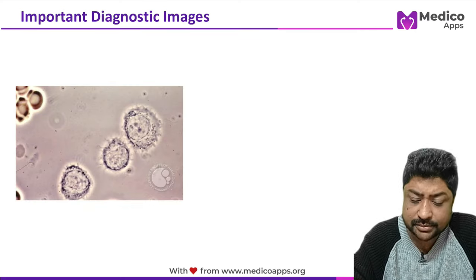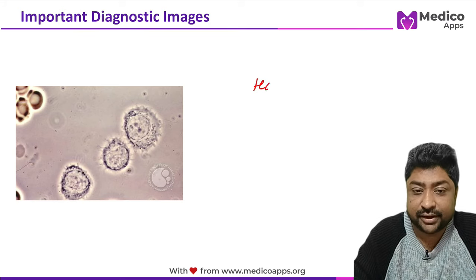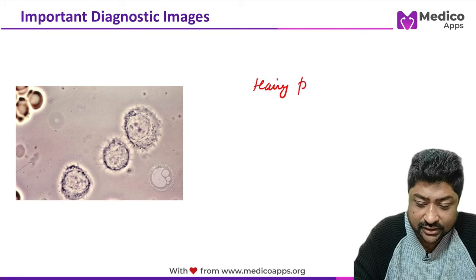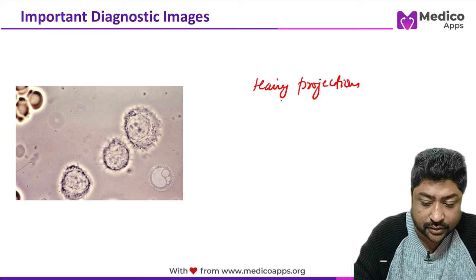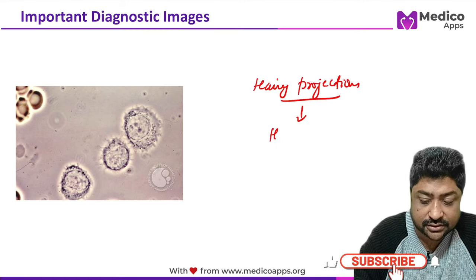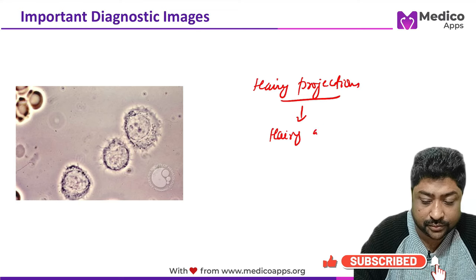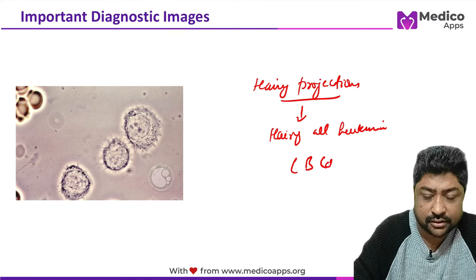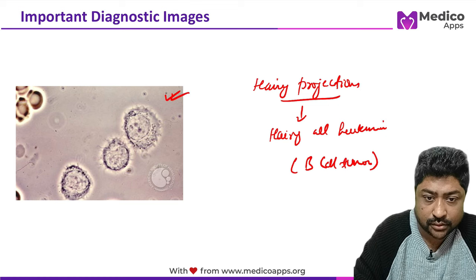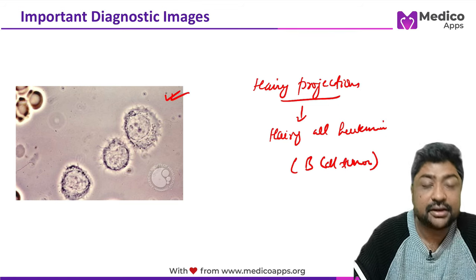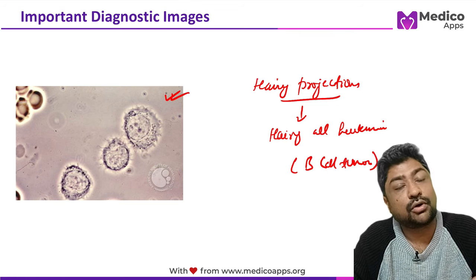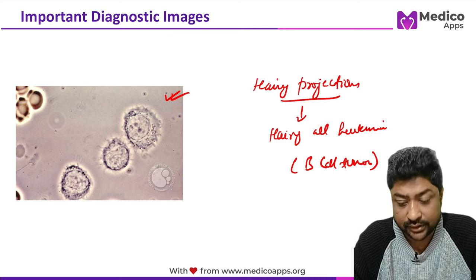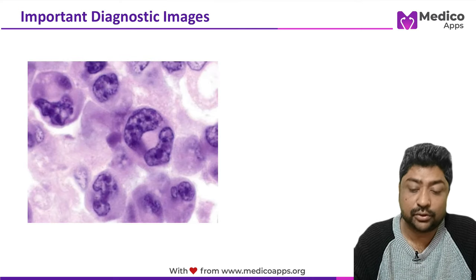The next image shows hairy projections on cells — this is hairy cell leukemia. It is a B cell tumor. Importantly, this image is seen on phase contrast microscopy, not standard staining.